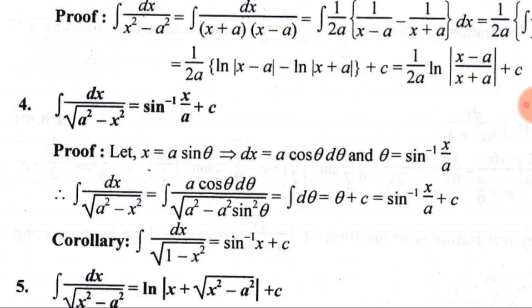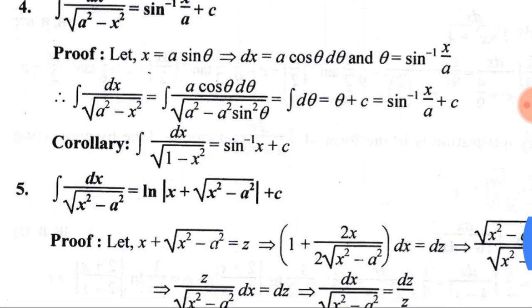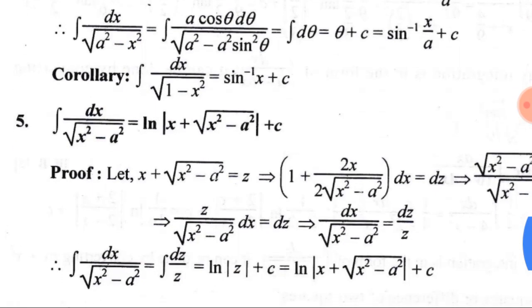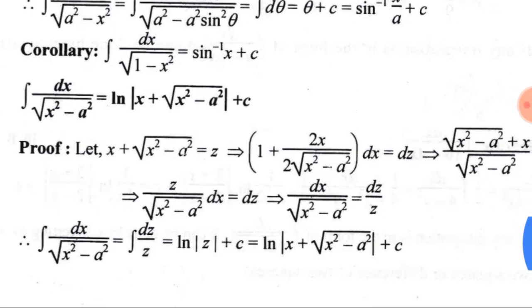From this standard integral we can also write a corollary: ∫dx/√(1−x²) = sin⁻¹(x) + C, where C is the integral constant.